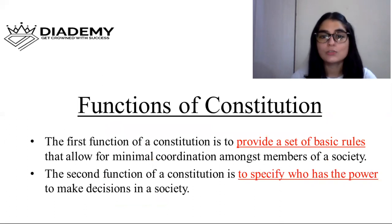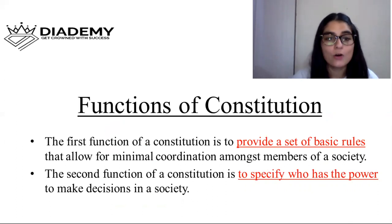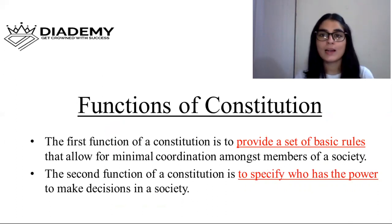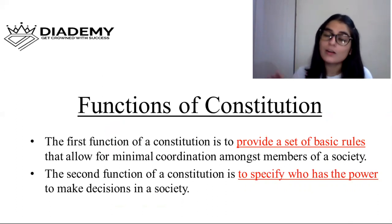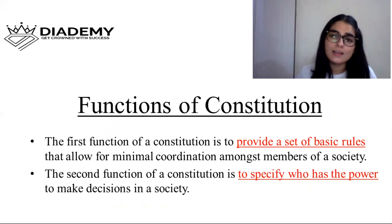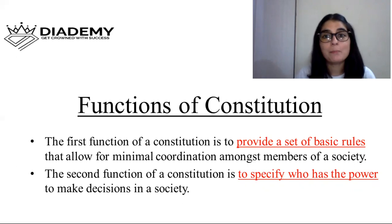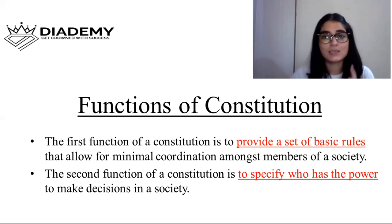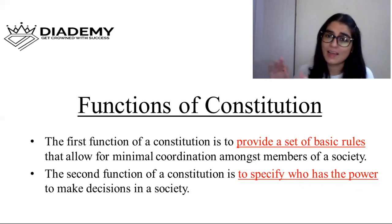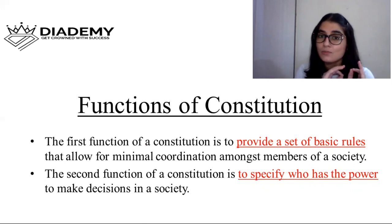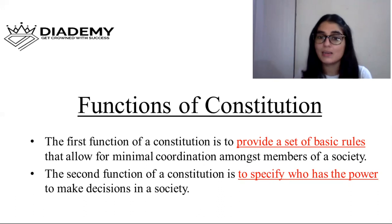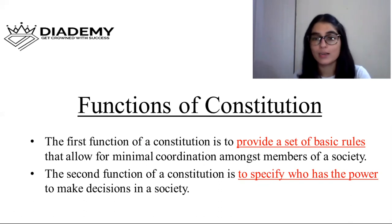The first function of a Constitution is to provide a set of basic rules that allow for minimal coordination among members of society. We know that when people live together they have conflicts, but basic rules help avoid those conflicts. For example, in the Big Boss show, however angry you are at another person, you cannot touch them — that is a minimum level of coordination maintained.